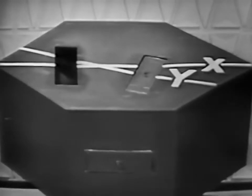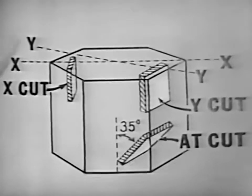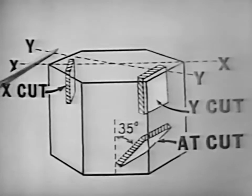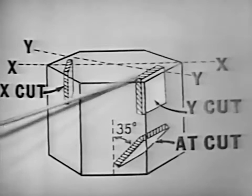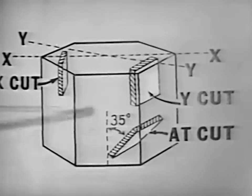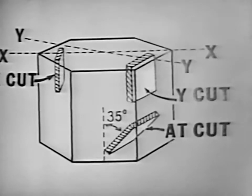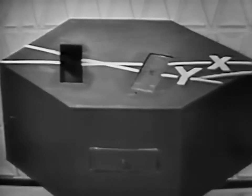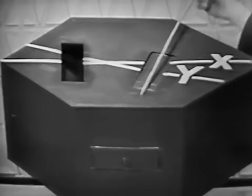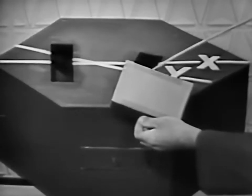For the second cut, we will use the Y-axis, which passes through the face of the crystal. This cut is taken perpendicular to the Y-axis and parallel to the Z-axis, which runs through the center of the crystal. The Y-axis passes through the face of the crystal; we cut perpendicular to that and parallel to the Z-axis. Since this cut was made in reference to the Y-axis, it is known as a Y-cut crystal.